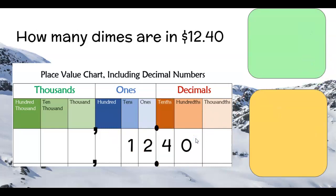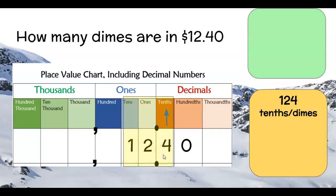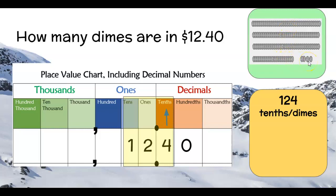What if we only had dimes? I'm going to put a zero in the hundreds place because when we talk about money we need to include the hundreds place to represent cents. How many dimes would it take to create twelve dollars and forty cents? Ten dimes is one dollar. If you look at your place value chart you can see 124. Yes — it takes 124 dimes to make twelve dollars and forty cents. Twelve and four tenths times ten gives us 124. When I multiply by ten it just slides one place value to the left, giving me whole numbers.